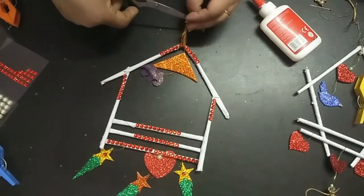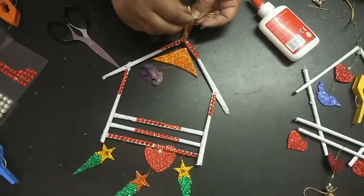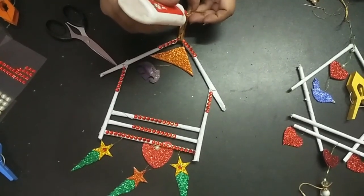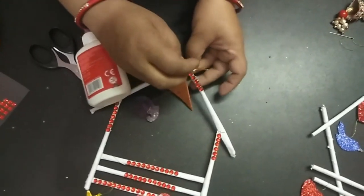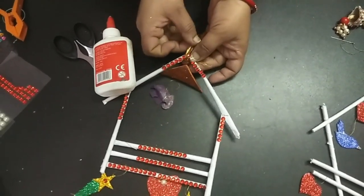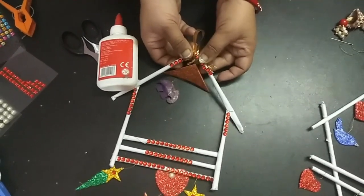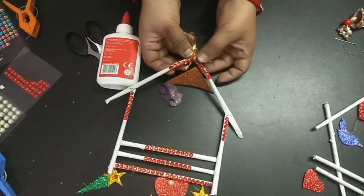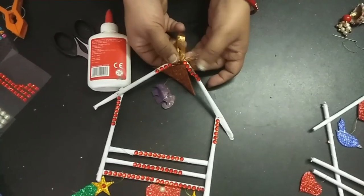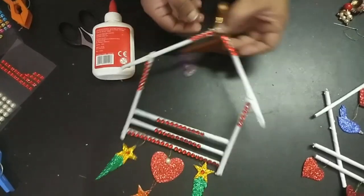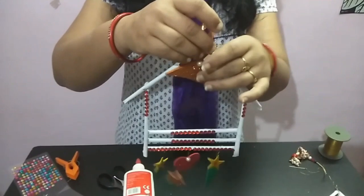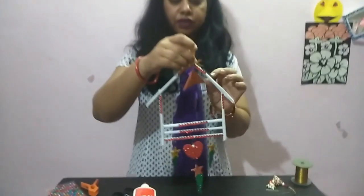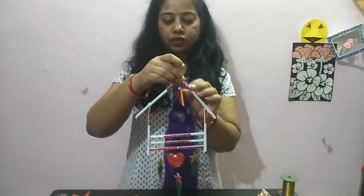Cut this. Apply a little glue, just turn it to the downside, and place it here. And let's see—a beautiful hanging is now ready for decorating your house. Thank you, children!